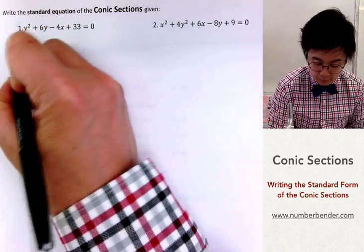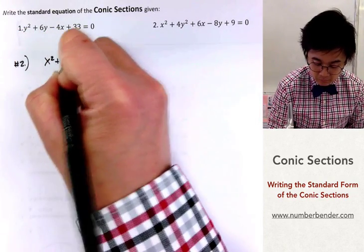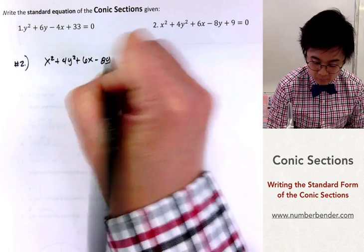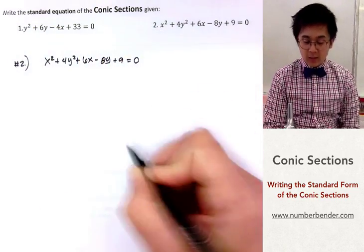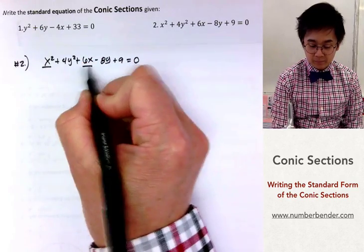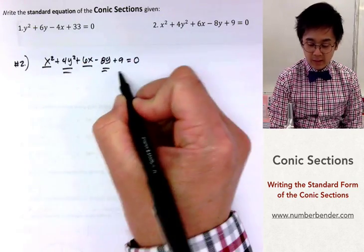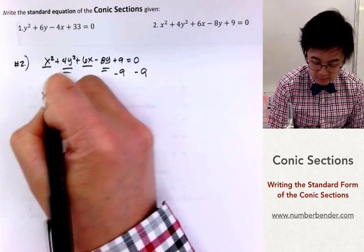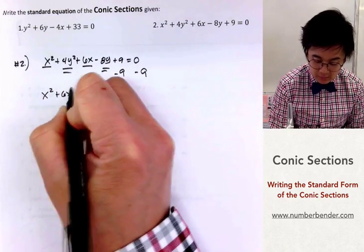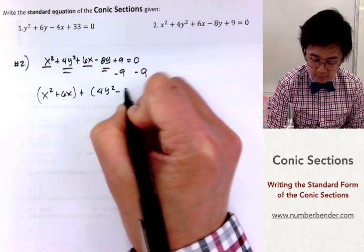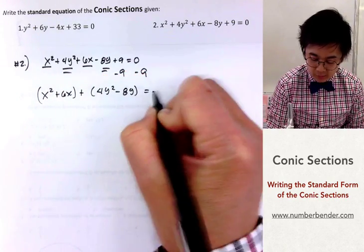For number 2, we're going to be grouping the x's together, the y's, and we'll minus 9 on both sides. So we are now going to have x squared plus 6x plus 4y squared minus 8y equals negative 9.